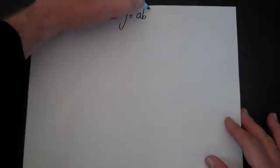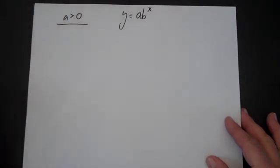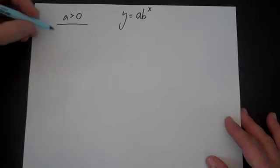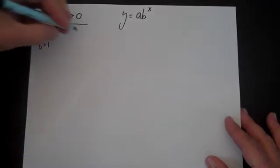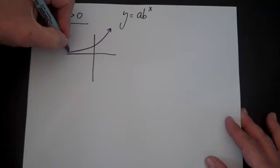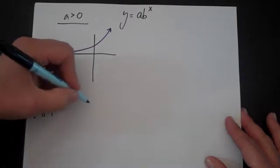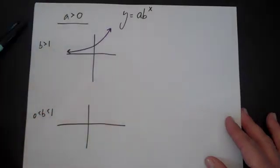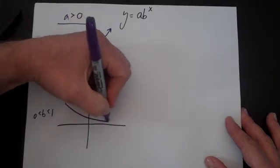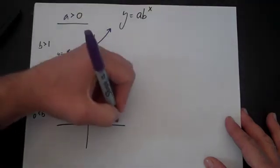Now we can look at all four problems together. For y equals a times b to the x with a positive: if b is greater than 1, you have exponential growth; if b is between 0 and 1, you have exponential decay. In both cases the initial value is a and the asymptote is y equals 0.